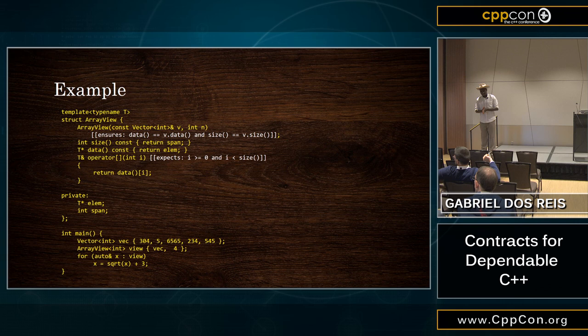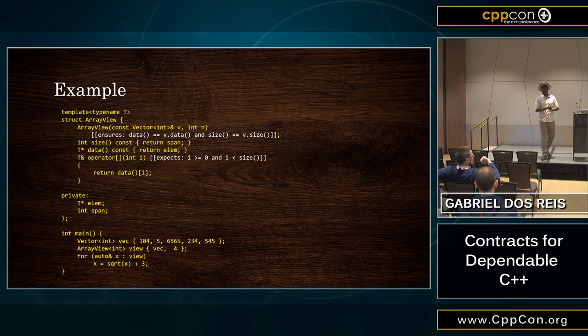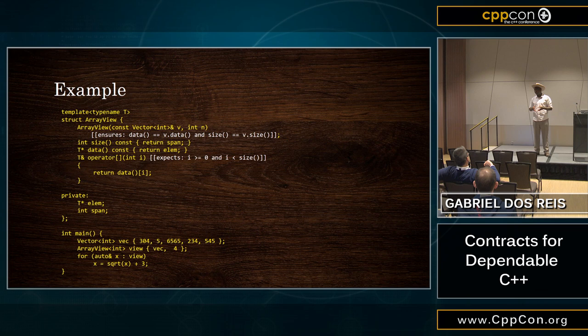Question about virtual functions: is there any provision to state that you cannot strengthen — meaning you cannot require more — and you cannot weaken the postcondition in an override? The proposal that we collectively put out back in May says: for simplicity, you cannot strengthen and you cannot weaken. You have to have the same contract. That can be a problem for certain people, but I'm still looking for simplicity — you can't strengthen and you can't weaken.